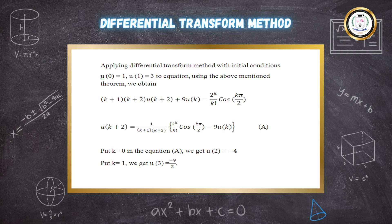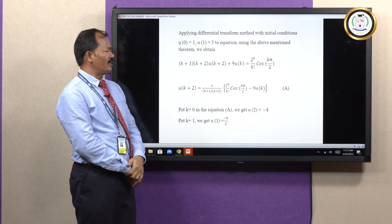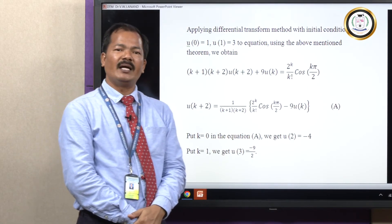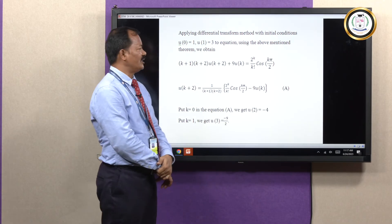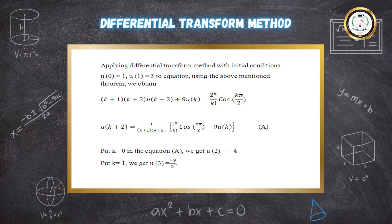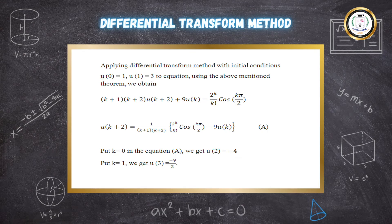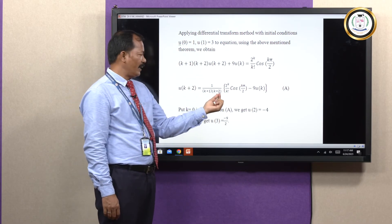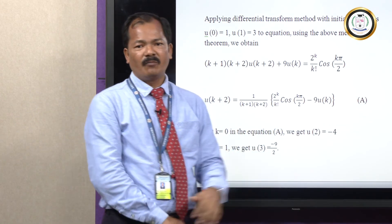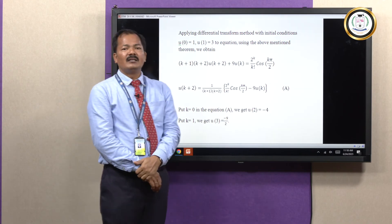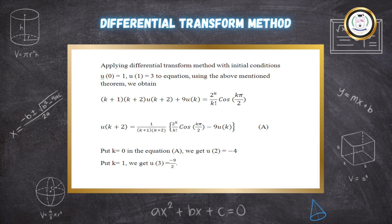Solving the same by the differential transform method: the first term (d-squared upon dt-squared) transforms to k plus 1 times k plus 2 times U of k plus 2. The second term 9 U of k is from the left-hand side. The right-hand side cos 2t, using Theorem 5, transforms to 2 to the power k upon k factorial times cosine of k-pi upon 2. Rearranging, the recurrence relation is U of k plus 2 equals 1 upon (k plus 1)(k plus 2), times [2 to the power k upon k factorial times cos(k-pi upon 2) minus 9 U of k]. Call this equation A. The initial conditions transform using Theorem 4 to U of 0 equals 1 and U of 1 equals 3.